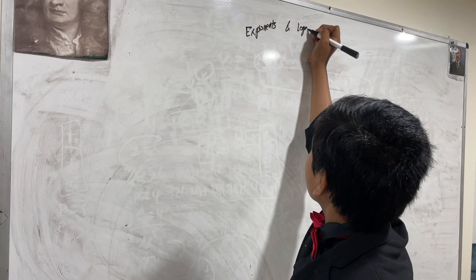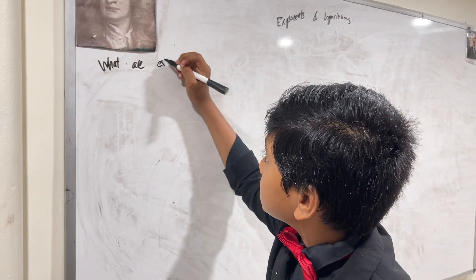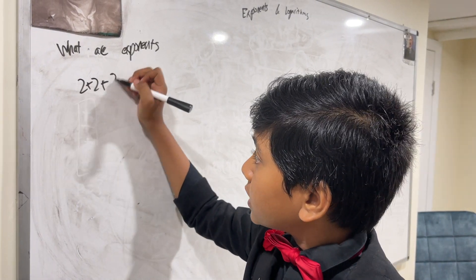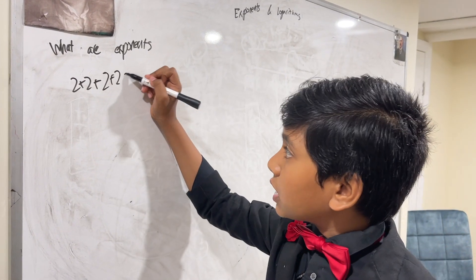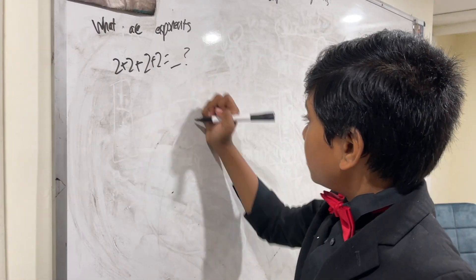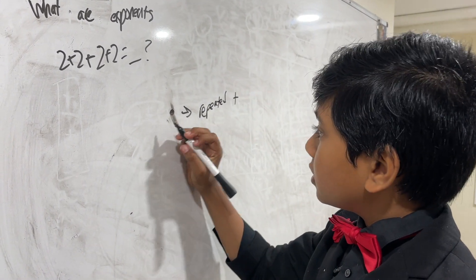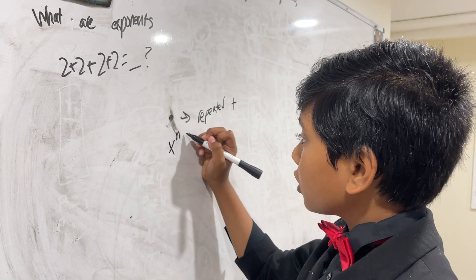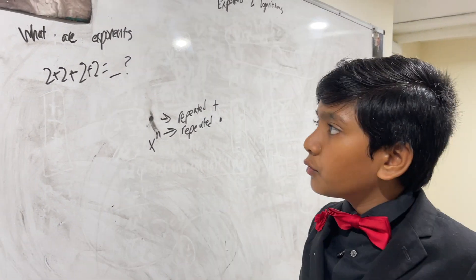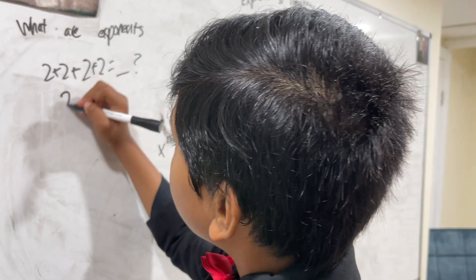Exponents and logarithms. First, let's review what exponents are. Just like multiplication is repeated addition — for example, two plus two plus two plus two expressed as multiplication — exponents are repeated multiplication. So here we have two being added four times, which is two times four.